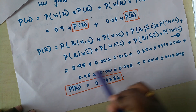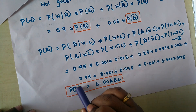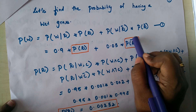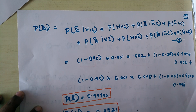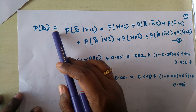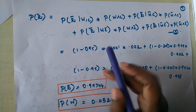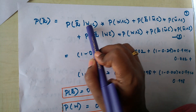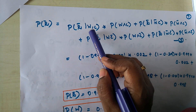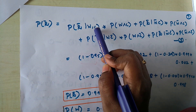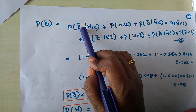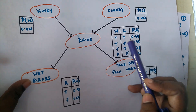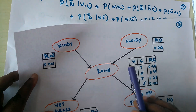We also need to calculate the probability of not raining in a similar way. Similar to the rain calculation, we will have four combinations, each multiplying the conditional probability and the joint probability. Given it is windy and cloudy, we calculate the probability of not raining.